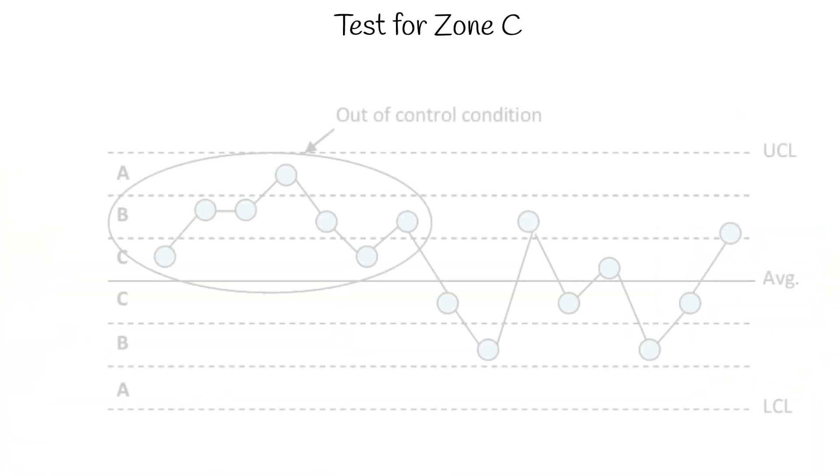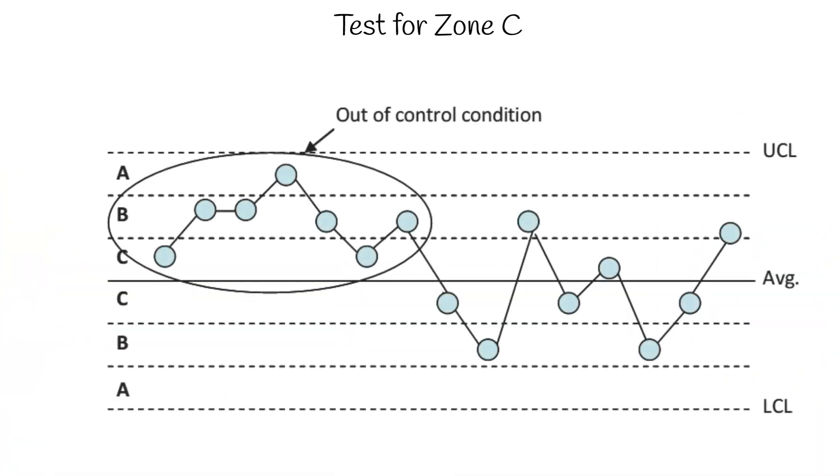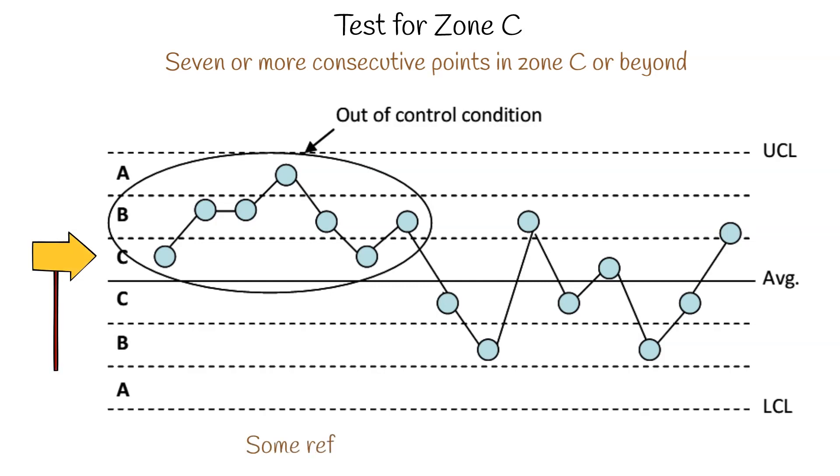And the test for zone C. If you have seven or more consecutive points in zone C or beyond, it is a special cause of variation present. You should note that some references use seven, others eight or nine points for this test.